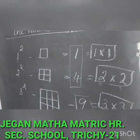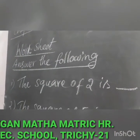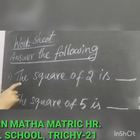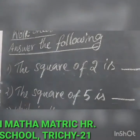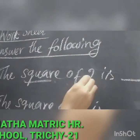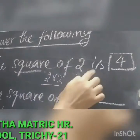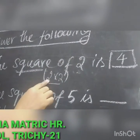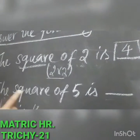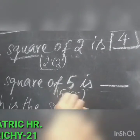Now let us see the worksheet. The heading is: answer the following questions — fill-ups and choose. First question: the square of 2 is blank. Square means multiply the same number by itself, so 2 into 2 is 4. The square of 2 is 4. Next: the square of 5 is 25.